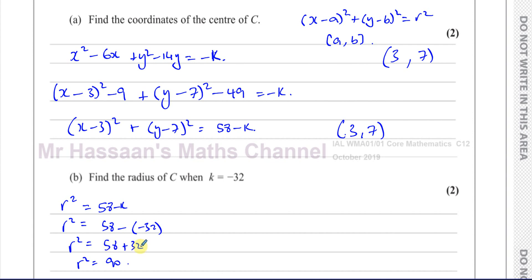58 plus 32, that's 80 plus 10, equals 90. Therefore, the radius is going to be the square root of 90, which we're going to express in simplified surd form. We see that there's 9 in here, so √9 × √10, which gives us 3√10.